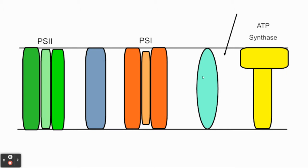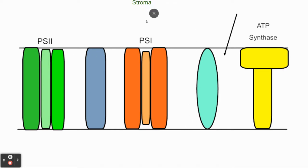Keep in mind that we're using the same idea — we have protein channels, we're going to have a concentration gradient, and we're going to utilize those concentration gradients. On the picture of the light-dependent reaction, you're going to start by labeling this side as the stroma.